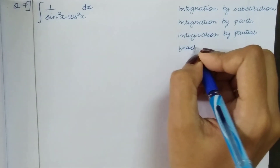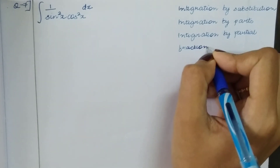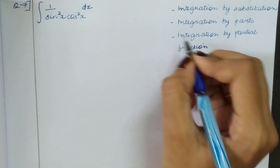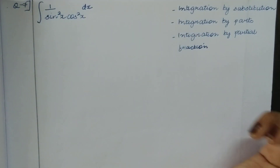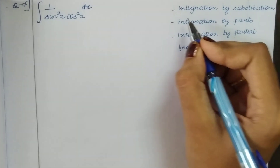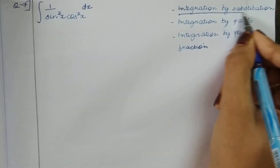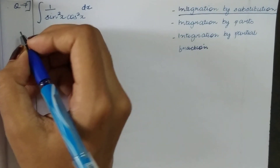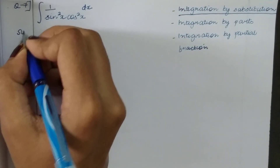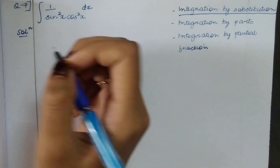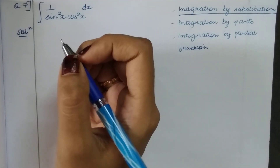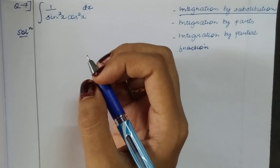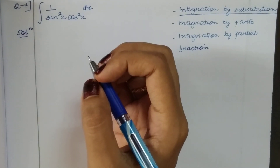Now we are going to start question number 7: the integral of 1 upon sin square x times cos square x, dx.